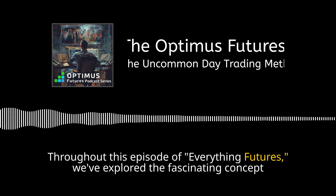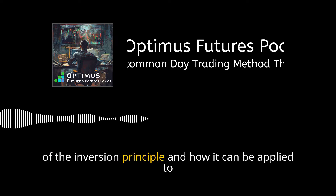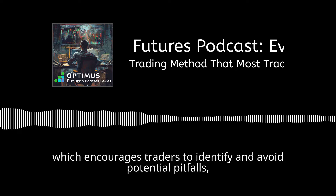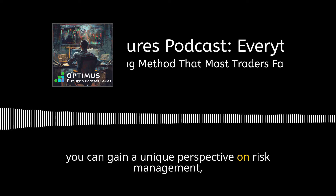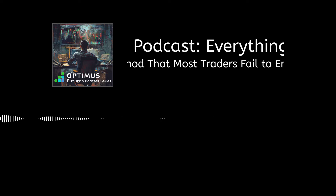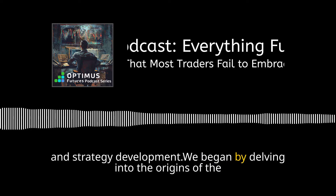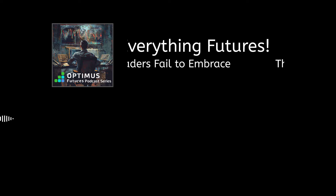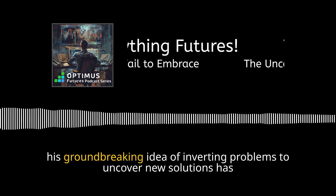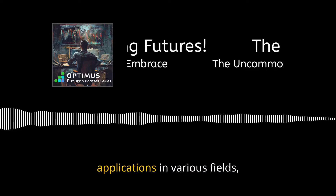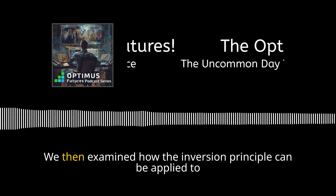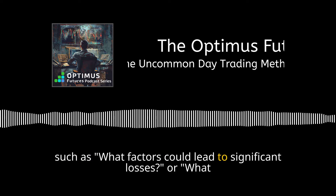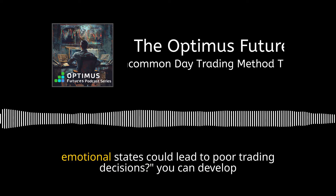Throughout this episode of Everything Futures, we've explored the fascinating concept of the inversion principle and how it can be applied to the world of day trading. By adopting this unconventional approach — which encourages traders to identify and avoid potential pitfalls — you can gain a unique perspective on risk management, emotional control, market analysis, and strategy development. We began by tracing the inversion principle's roots back to German mathematician Carl Gustav Jacob Jacobi, then examined how the principle can be applied to specific aspects of day trading by asking inverted questions such as, 'What factors could lead to significant losses?' or 'What emotional states could lead to poor trading decisions?'